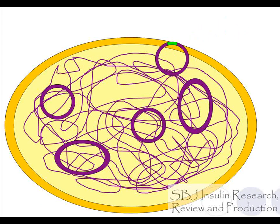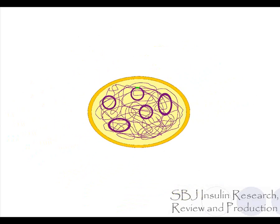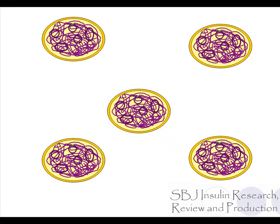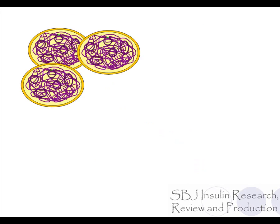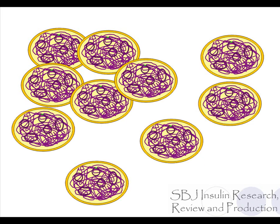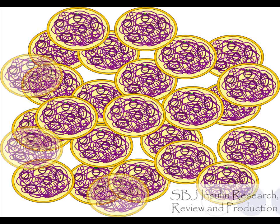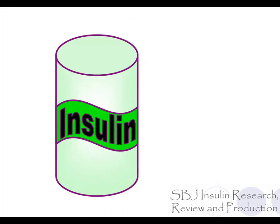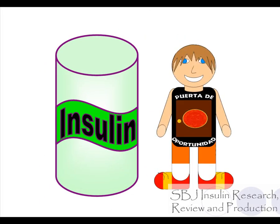Then we can put the plasmid with the insulin gene back into the bacteria. The bacteria is now a genetically modified organism, because it's a living thing and we have modified or changed its genes. The bacteria duplicates again and again to make many, many bacteria with the insulin gene. The bacteria have a human insulin gene, so they make human insulin. The scientists can take this insulin and give it to people with diabetes, like Prem, so that they can be healthy and happy.